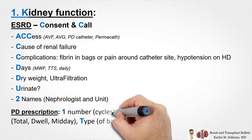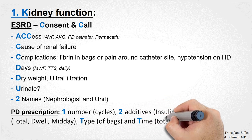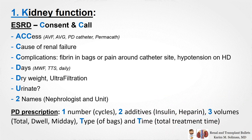If the patient is on PD, ask about the PD prescription using three items: one — number (cycles), two — additives (does the patient add insulin or heparin to the bags?), three — volume (what's the total volume, the dual volume, and the midday exchange volume?).